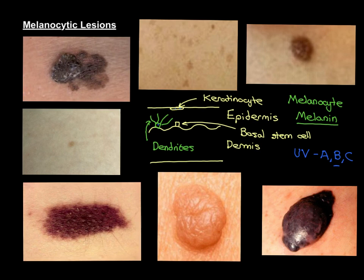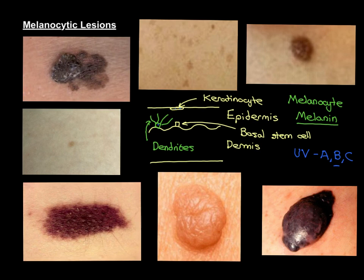One final point: melanocytes can change their activity in response to sun exposure. If you sunbathe, your melanocytes are stimulated to produce more melanin to protect your body from the increased radiation, resulting in darker skin — this is the phenomenon of tanning. Melanocytes adapt the amount of melanin they produce in response to the amount of ultraviolet radiation you're exposed to. In the next video, we'll discuss the seven different types of melanocytic lesion and what has happened in terms of melanocytes.